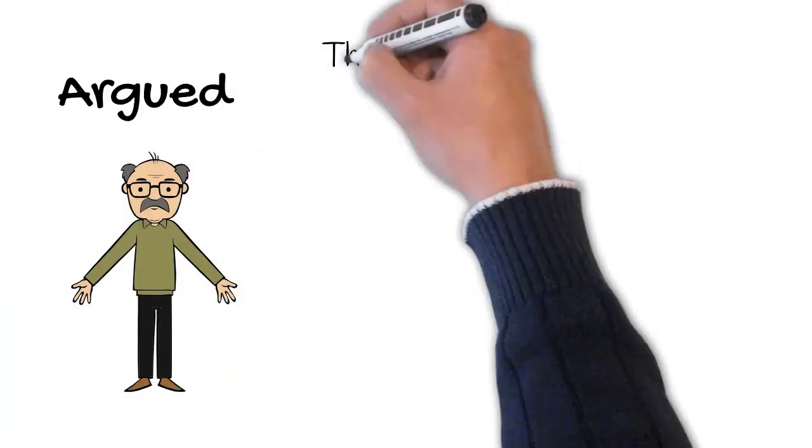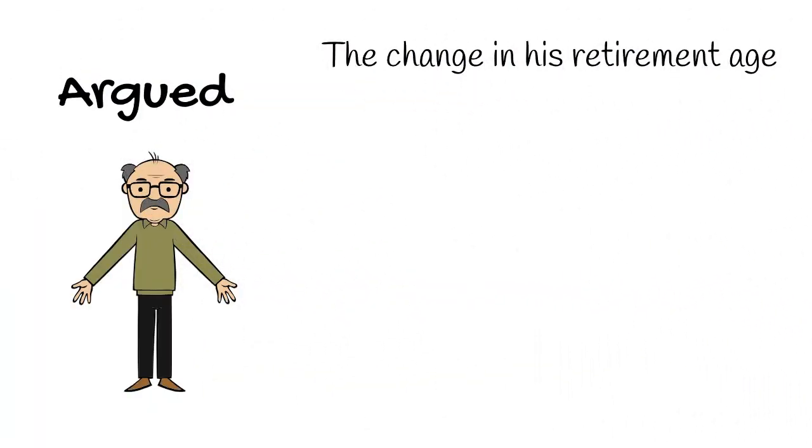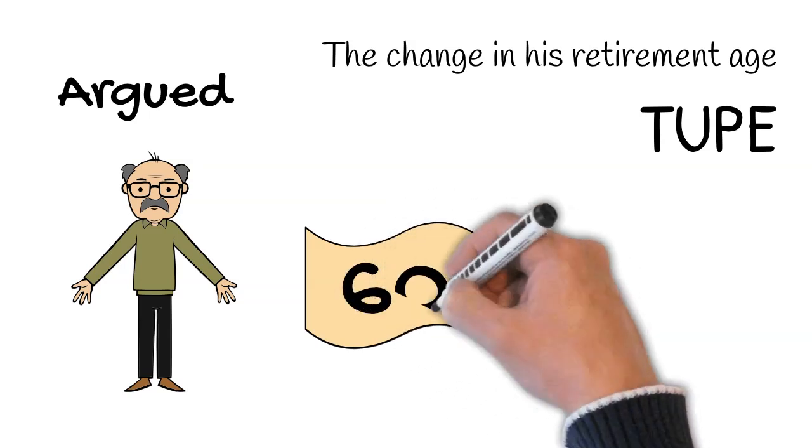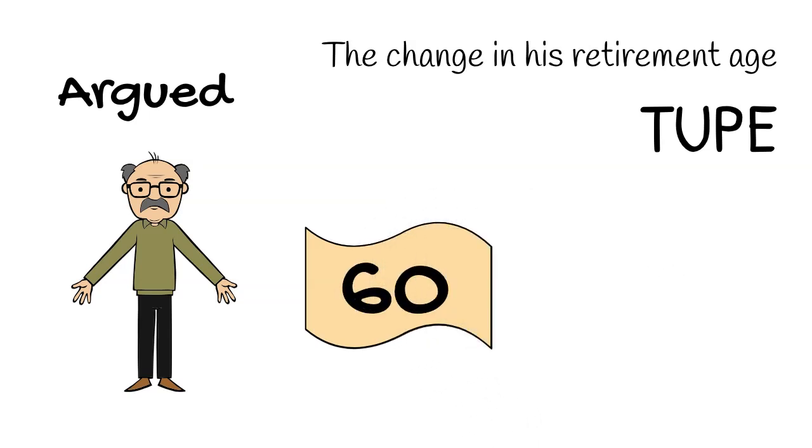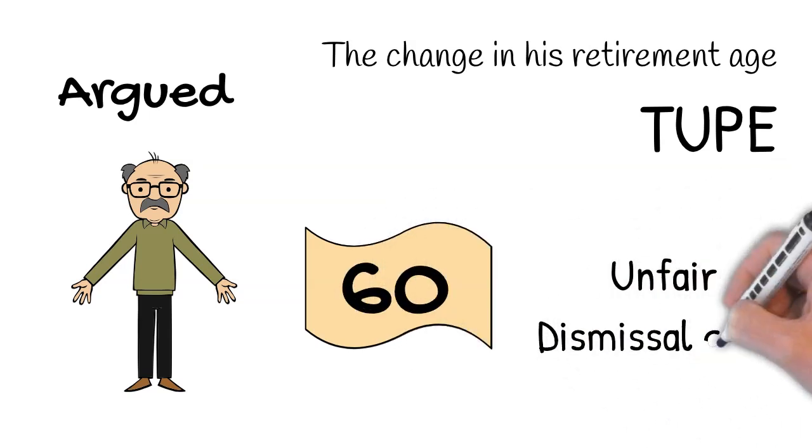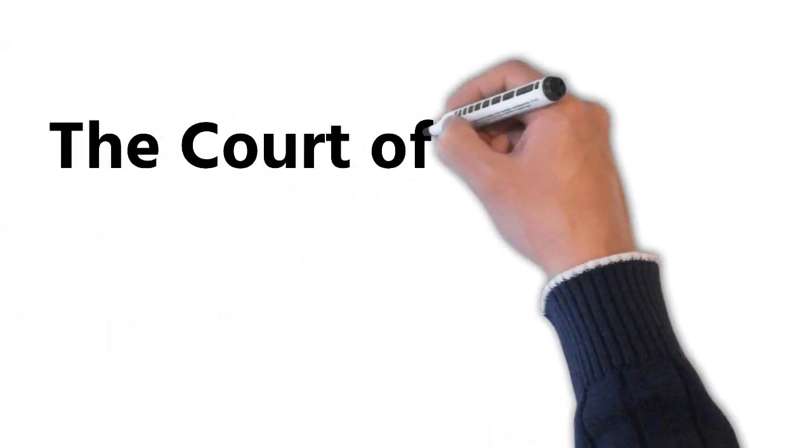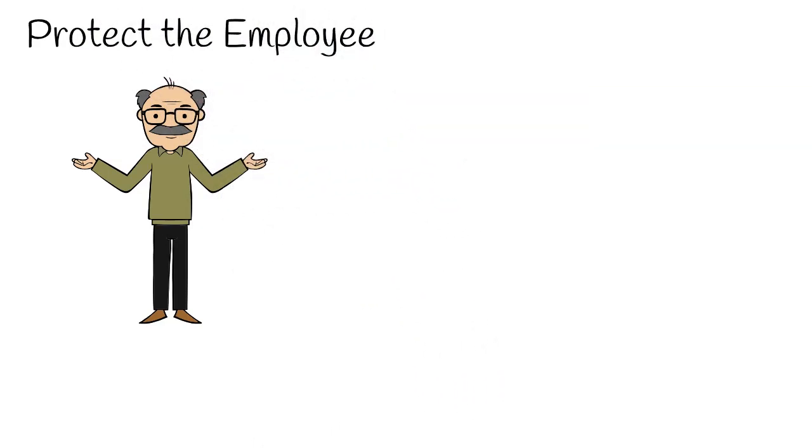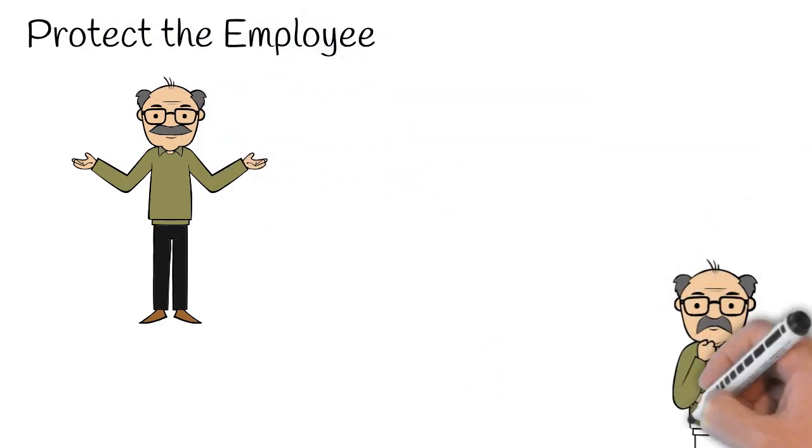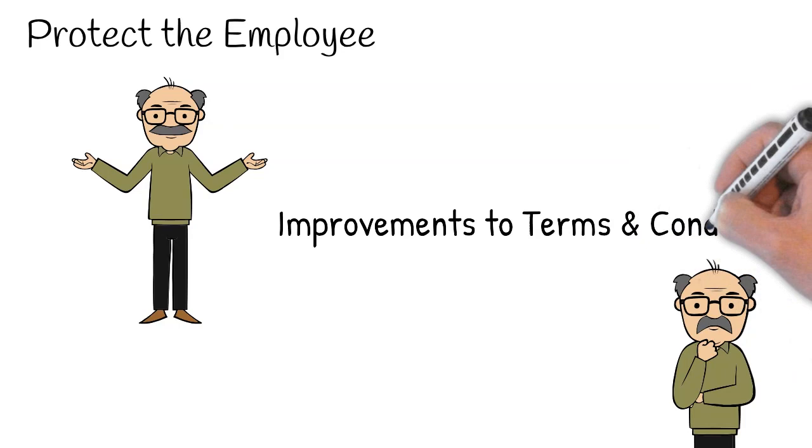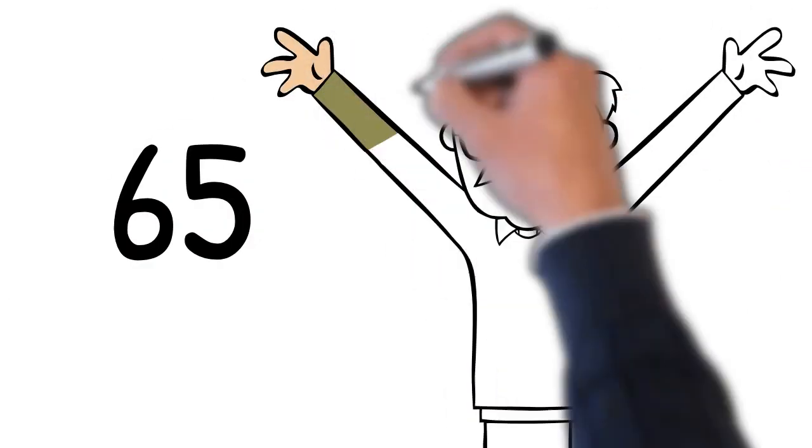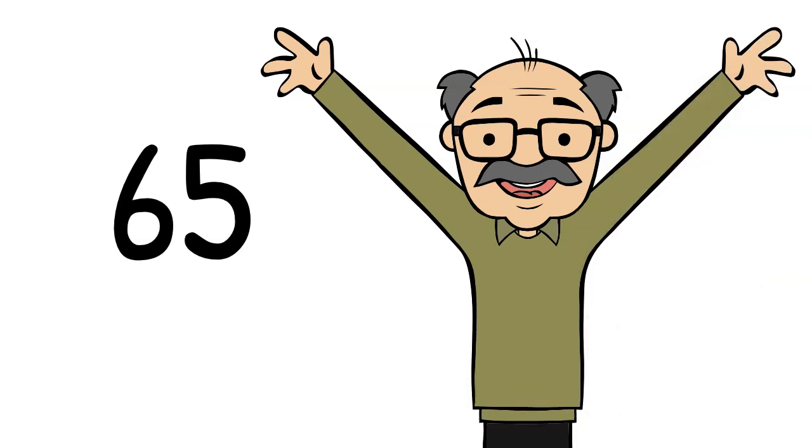The employer argued the change in his retirement age was invalid under TUPE. If it was invalid under TUPE, it meant his retirement age remained 60 and it meant that he couldn't bring an unfair dismissal claim. The Court of Appeal disagreed. TUPE, said the Court of Appeal, was designed to protect the employee and there was no need to protect him against improvements in his terms and conditions, i.e. extending his retirement age to 65, and so he could rely on that higher retirement age.